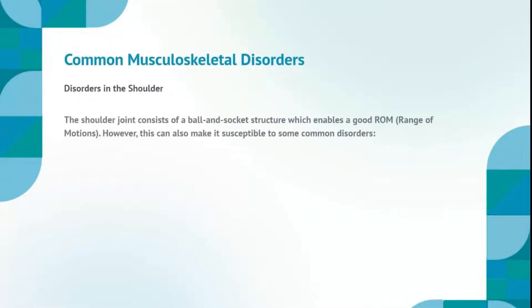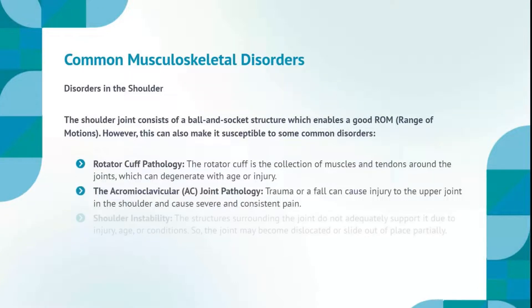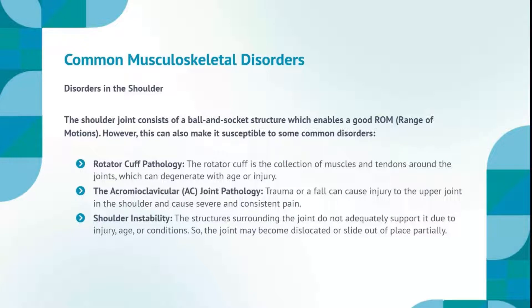Disorders in the shoulder: the shoulder joint consists of a ball and socket structure which enables a good range of motion, but this can also make it susceptible to some common disorders. Rotator cuff pathology: the rotator cuff is the collection of muscles and tendons around the joints, which can degenerate with age or injury. Acromioclavicular joint pathology: trauma or a fall can cause injury to the upper joint in the shoulder and cause severe and consistent pain. Shoulder instability: the structures surrounding the joint do not adequately support it due to injury, age, or conditions, so the joint may become dislocated or slide out of place partially.